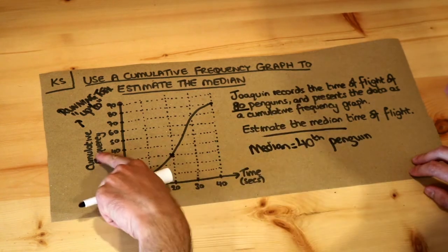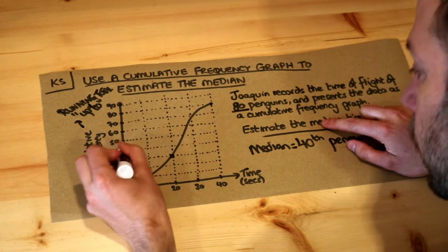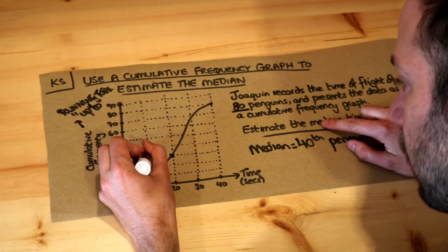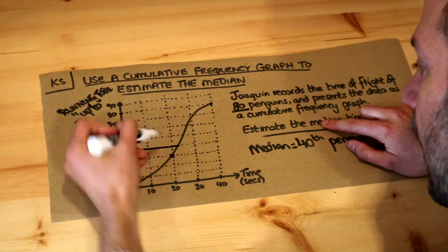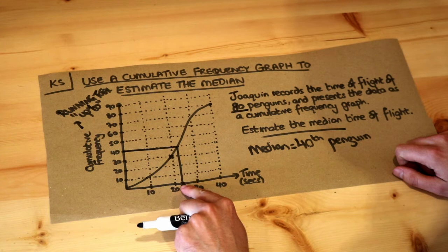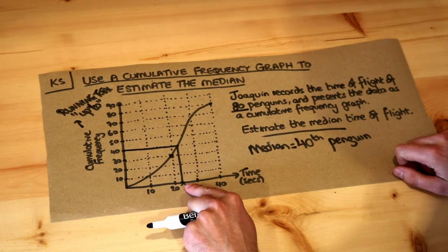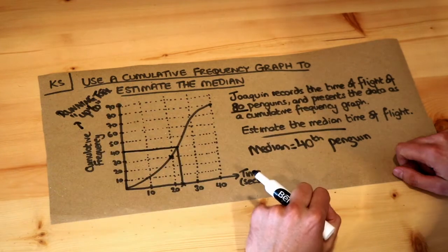So what we do is go along to 40 on the cumulative frequency, and you should show your line as working. So we go across the 40th penguin and then come down, and what this value means here, which is roughly 23, is that 40 penguins had a time of up to 23 seconds. Again, those magic words "up to."